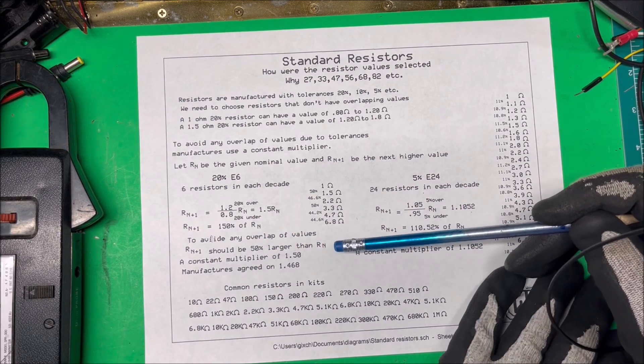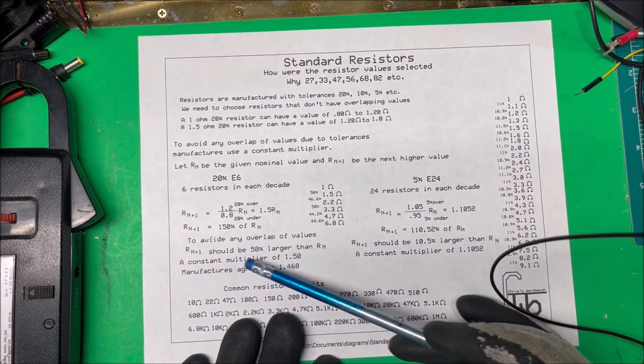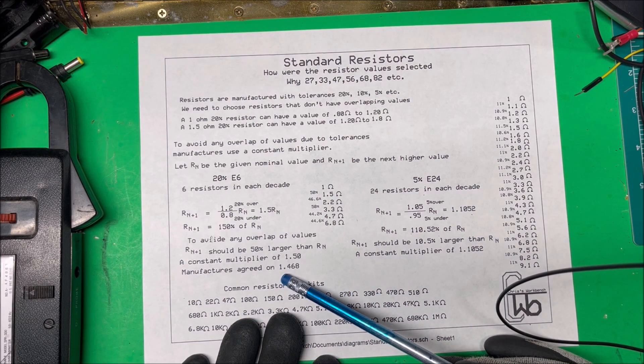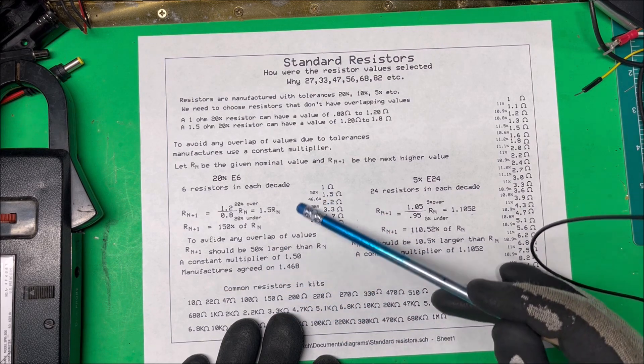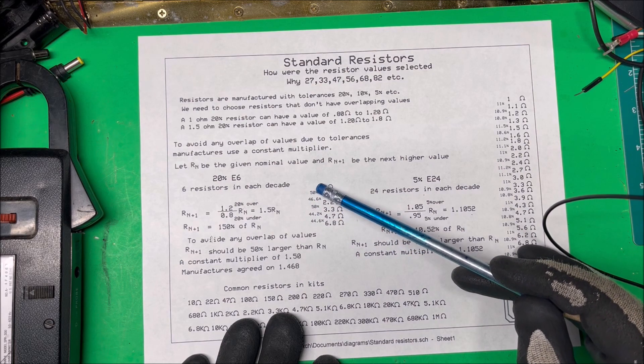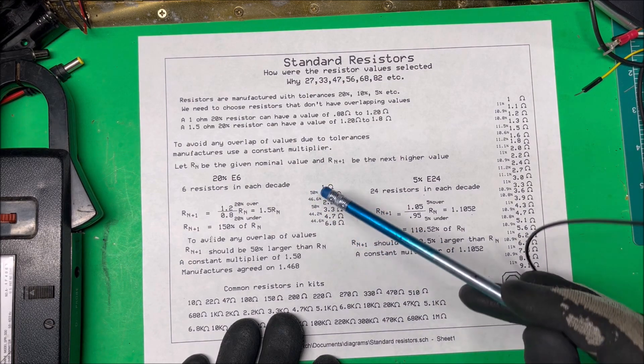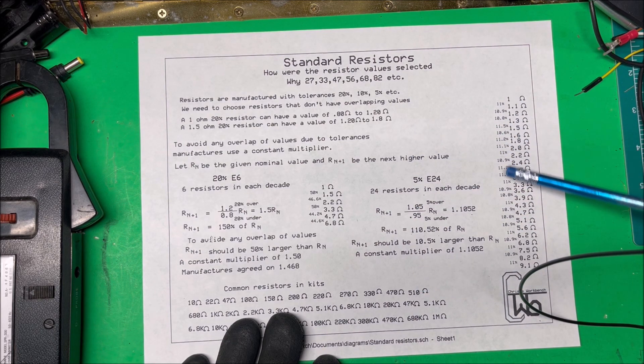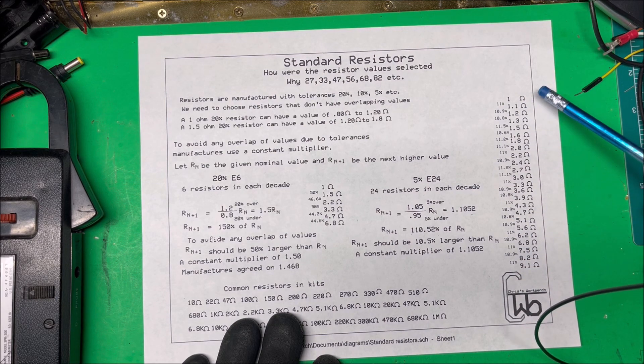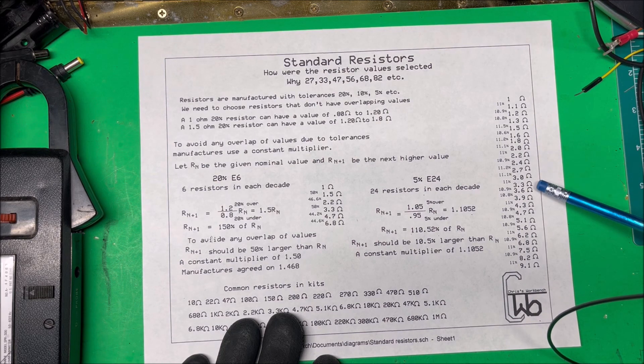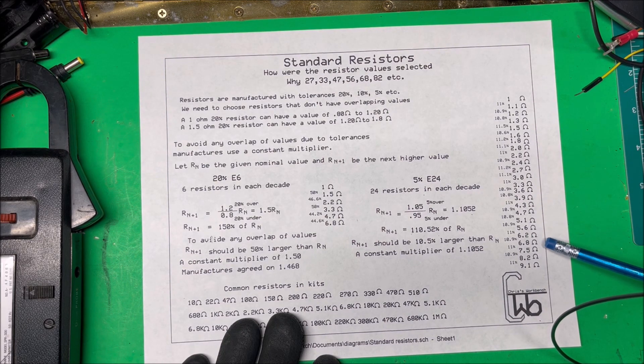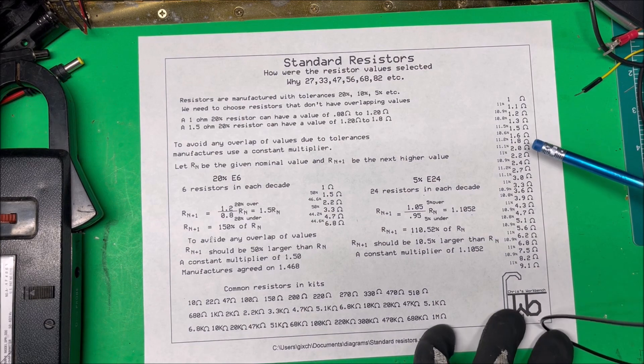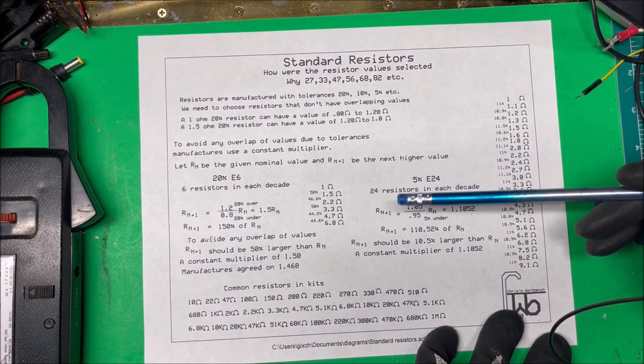The next higher value resistor should be 50 percent larger than the previous resistor, meaning they have a constant multiplier of 1.5. Now manufacturers agreed to have a multiplier of 1.468, but they don't want it to be over 50 percent. They wanted these values to be equal to the same values in the 10 percent series and in the 5 percent series. These are the five percent resistors here - you have 1, 1.5, 2.2, 3.3, 4.7, and 6.8, so the same values in all the series of resistors.